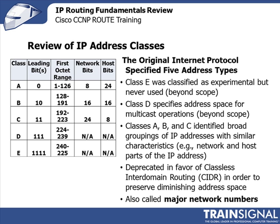Let's do a quick review of the different IP address classes — this is IP version 4; we can talk about IP version 6 later in a separate lesson. Originally, the internet protocol standard specified five different address types: A, B, C, D, and E. Class E was considered experimental — it was really never used, and it's far beyond the scope of anything we're likely to discuss.